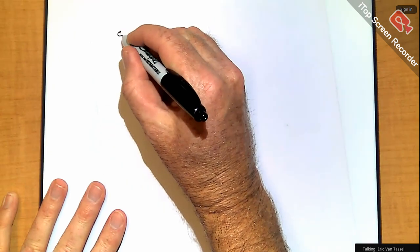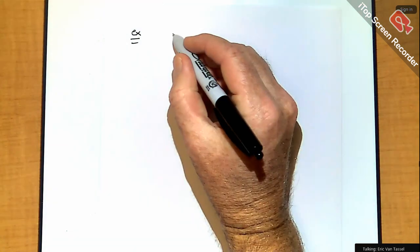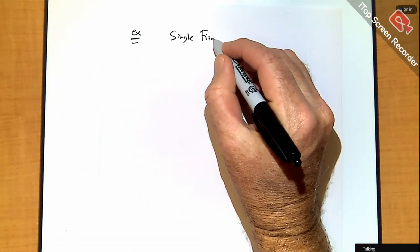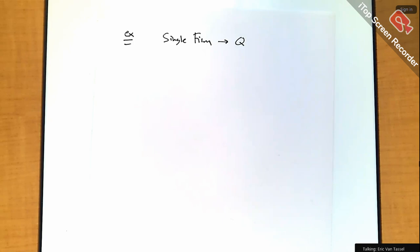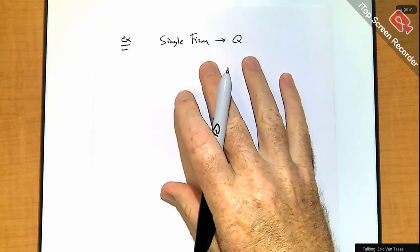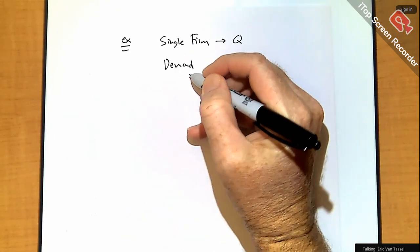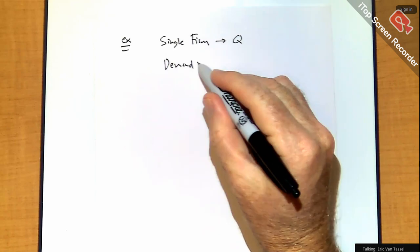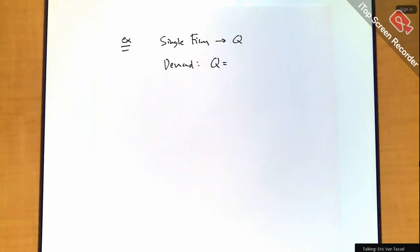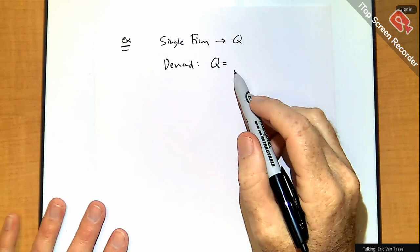Let's start with an example — how to solve these monopoly problems. My single firm produces some good Q, that's my output. There's a demand given for good Q — the single firm faces a demand curve. We'll focus on linear demand curves. If things are non-linear, then we'd need integrals. Sticking to linear demand curves makes things much easier — we can use geometry. Do you guys remember your integration? Integration by parts?